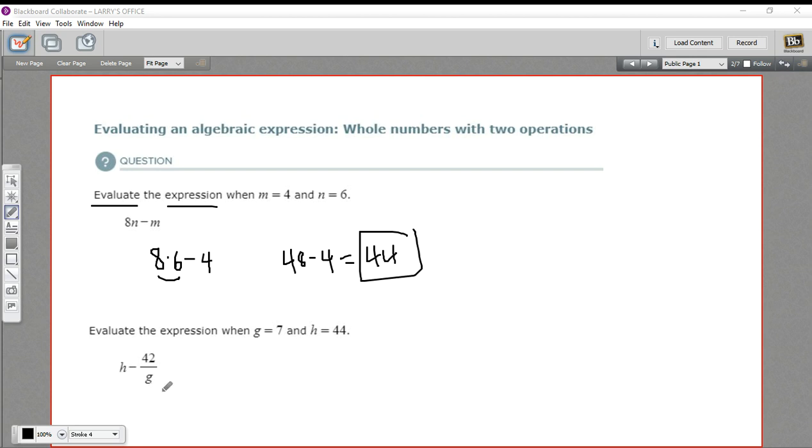Let's try another one. This one maybe looks a little bit more complicated. We've got h minus 42 over g. But we're really just going to do the same thing. We're going to take these numbers and plug in 44 for h and 7 for g. So let's rewrite this.